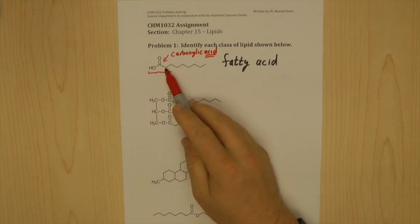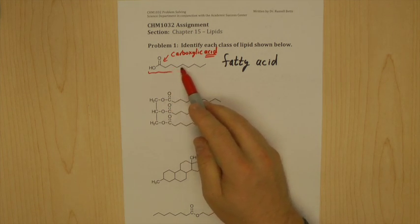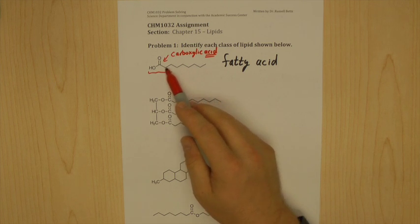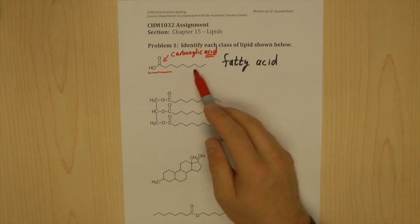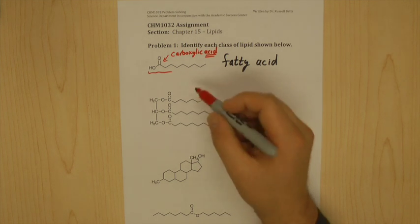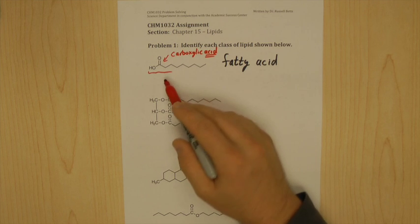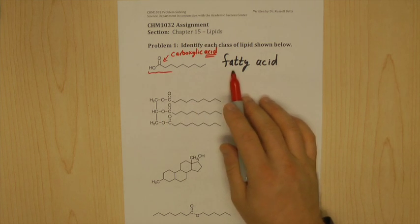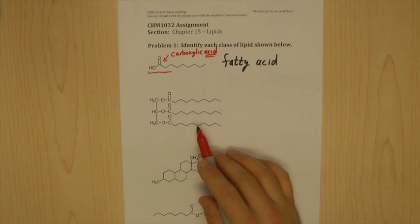And this long chain of hydrocarbons here, this is an alkane or a hydrocarbon chain. This is the nonpolar side of the molecule or the fat part. This is the fatty part. So this is what makes it a fatty acid.